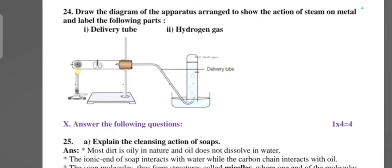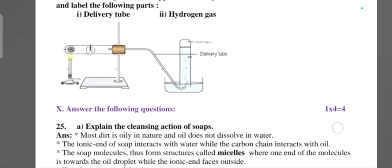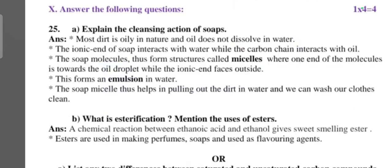Question number twenty-four: draw the diagram of the apparatus arranged to show the action of steam on metals and label the following parts: delivery tube and hydrogen gas. Next main, answer the following question, four more questions. Explain the cleansing action of soap. Most dirt is oily in nature and oil does not dissolve in water. The ionic end of the soap interacts with water while the carbon chain interacts with oil. The soap molecules form a structure called micelles where one end of the molecules is towards the oil droplets while the other end faces outside. This formation of emulsion in water, the soap micelles thus help in pulling out the dirt in water and we can wash our clothes clean.